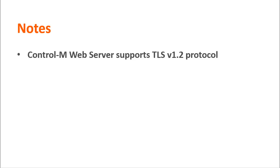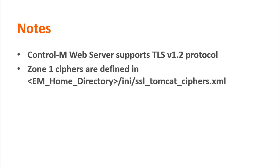In addition, the Control-M web server only supports the TLS v1.2 SSL protocol. The available ciphers for Zone 1 are defined in the SSL Tomcat ciphers.xml file. If you want to use a cipher that is not listed in the file or limit the listed ciphers, see the Control-M help.